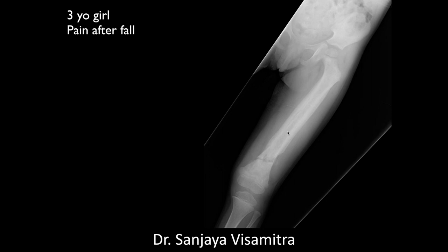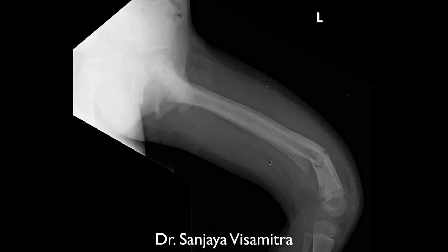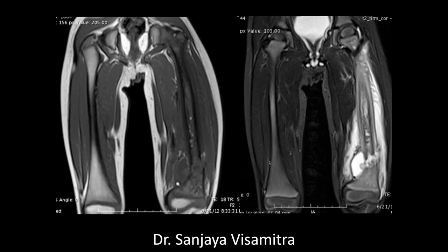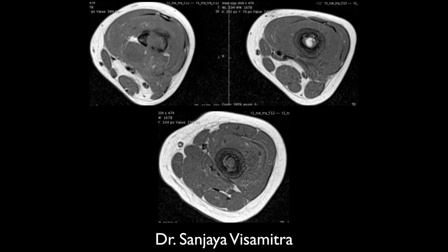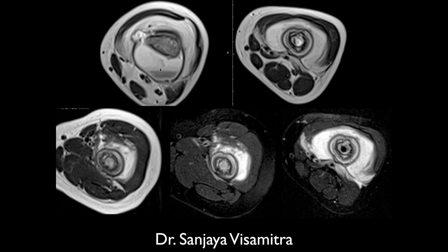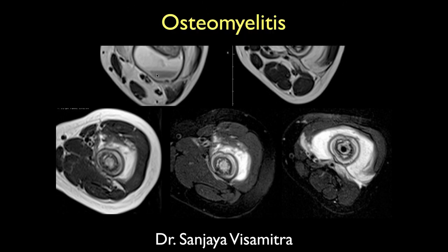A three-year-old girl with pain after a fall. There is extensive periosteal reaction and a distal femur fracture that is not healing well, with fluid and edema within the soft tissues and bone. This looks like osteomyelitis after fracture — or more precisely, chronic osteomyelitis with periosteal reaction that then led to a pathologic fracture.